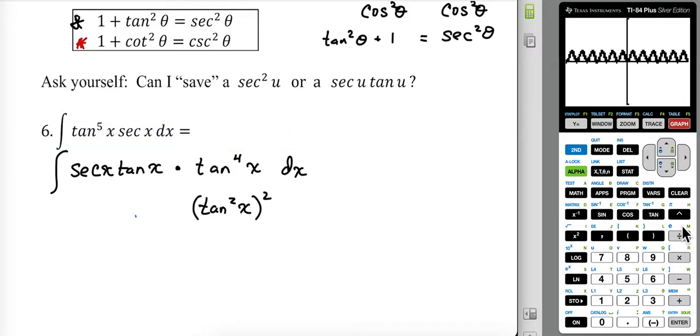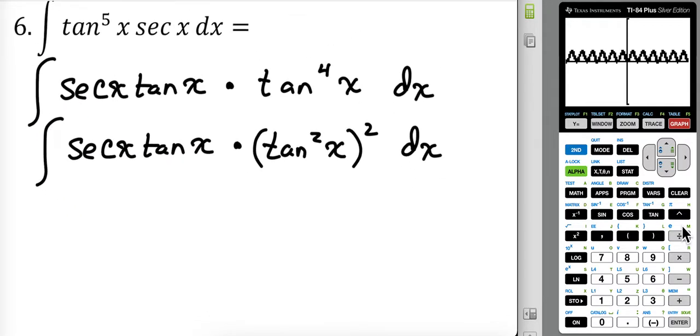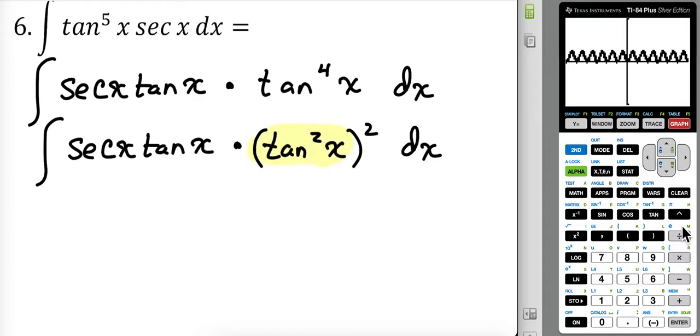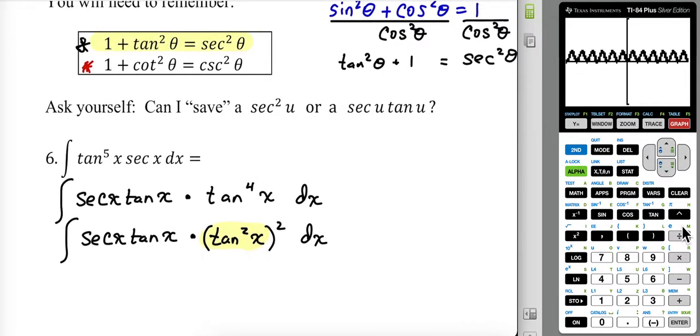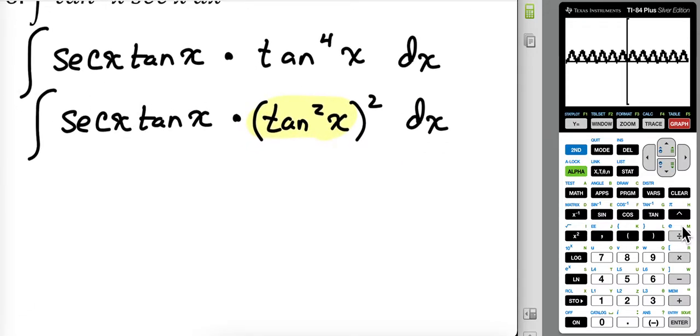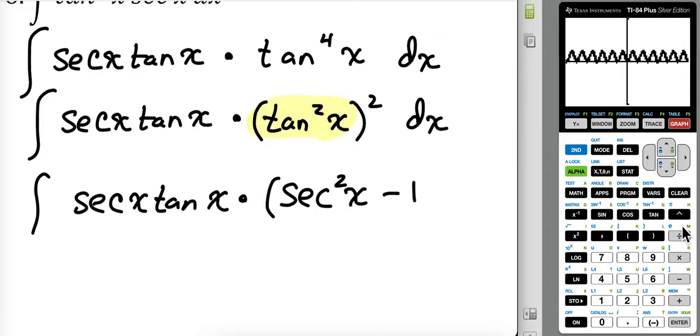It's more algebraic than anything else. But I do know that tangent squared, going back up to this rule, tangent squared plus one is secant squared. But if I subtract one from both sides, I get tangent squared equals secant squared minus one.